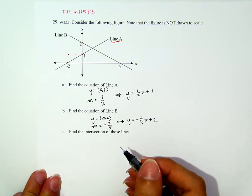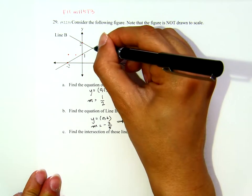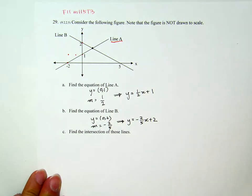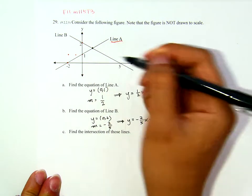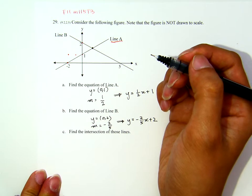Now, part C, find the intersection of those lines. Basically, the question is, what is the coordinate here? Now, notice that because this figure is not drawn to scale, then we cannot just read it from there. Especially, we don't have the grids to read from.